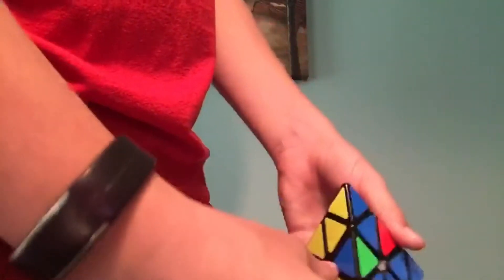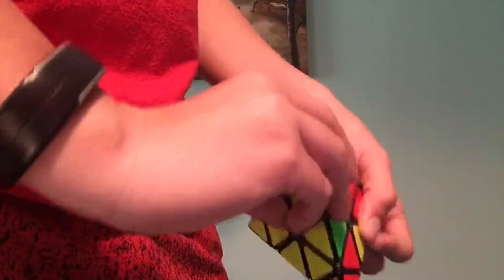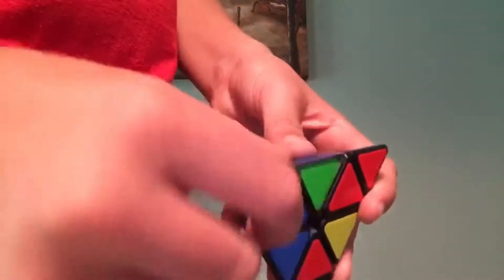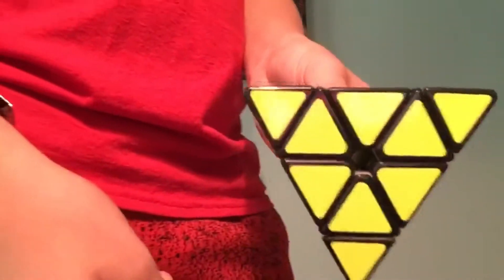And you do the same here, except that yellow's right there, so it's already in place. So you would go up, turn, down, turn. And that would give you the yellow side.